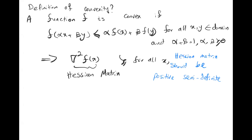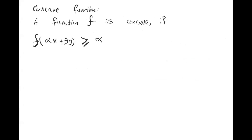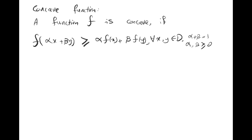In contrast with the definition of convexity, let's talk about the definition of a concave function. The function f is concave if f(αx + βy) ≥ αf(x) + βf(y) for all values of x and y in the domain, where α + β = 1 and both α and β are positive coefficients. If you want to translate this into the Hessian matrix definition, the Hessian matrix should be negative semi-definite for all values of x.